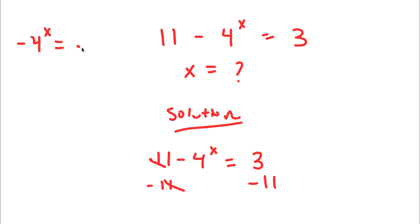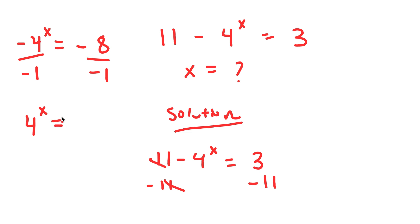That gives negative 8. Now, if I divide both sides by negative 1, negative 4 to the power of x divided by negative 1 is simply 4 to the power of x. So I have 4 to the power of x is equal to negative 8 divided by negative 1, which is simply 8. So now I have the problem 4 to the power of x is equal to 8.